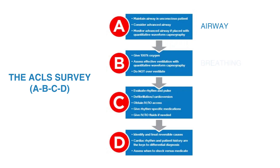B stands for breathing. In cardiac arrest, administer 100% oxygen. Keep blood oxygen saturation, or SATs, greater than or equal to 94% as measured by a pulse oximeter. Use quantitative waveform capnography when possible. Normal partial pressure of carbon dioxide is between 35 to 40 millimeters of mercury. High-quality CPR should produce carbon dioxide between 10 to 20 millimeters of mercury. If the ETCO2 reading is less than 10 millimeters of mercury after 20 minutes of CPR for an intubated individual, then you may consider stopping resuscitation attempts.